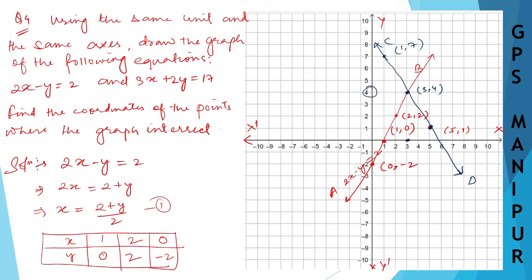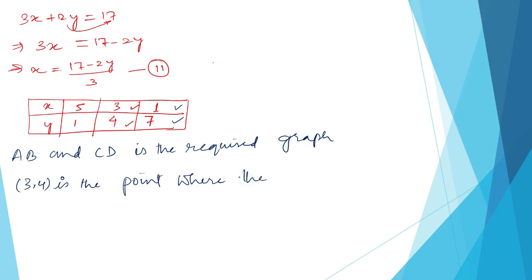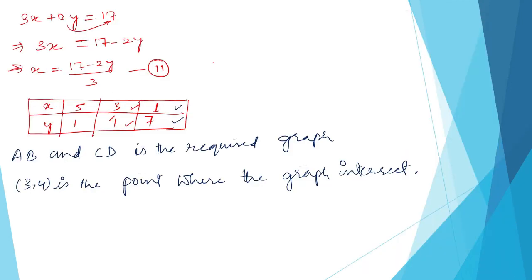The question also asks us to find the coordinates of the point where the graphs intersect. Both graphs cross each other, and looking at the graph, this intersection point is 3 comma 4. So (3, 4) is the point where the graphs intersect. That's all — I hope you can understand. Thank you so much; we'll meet in the next one.